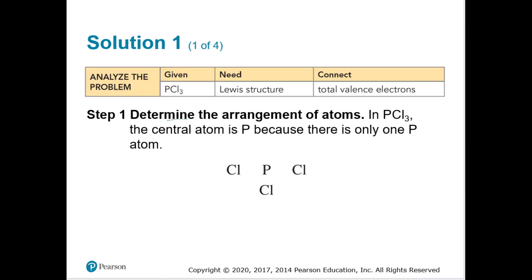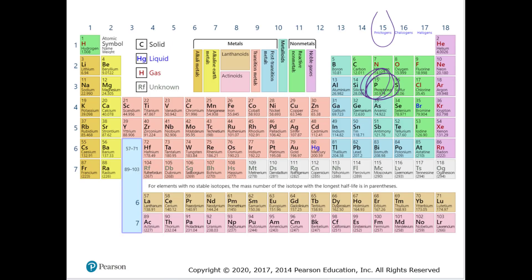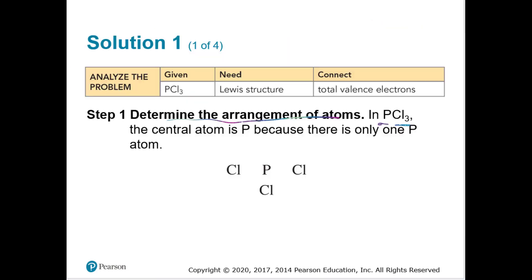First, determine the arrangement of atoms. There's one P and three chlorines, so P will be our central atom. Phosphorus has five valence electrons and chlorine has seven. Drawing phosphorus with five dots and each chlorine with seven, we arrange them so the unpaired electron of each chlorine is close to P. We can see that these pairs will bond.